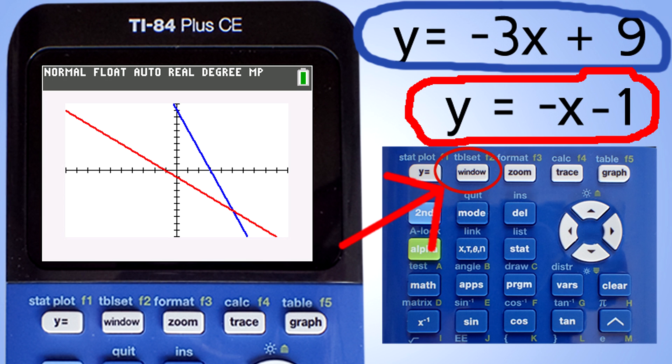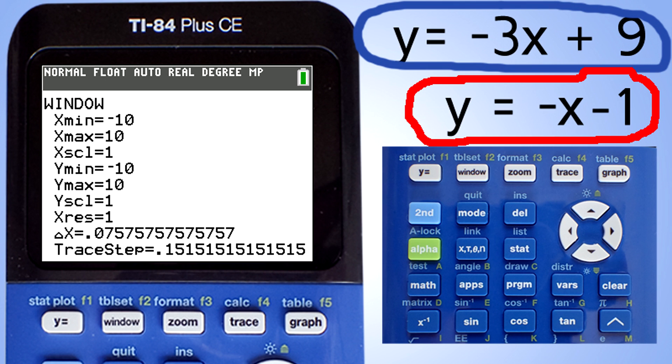If you do not see this graph, then you need to adjust the graphing window by pressing this window key here. This window pops up. Change your x min, x max, y min, and y max to these numbers. Then press this graph button here. That will bring us to our graph.